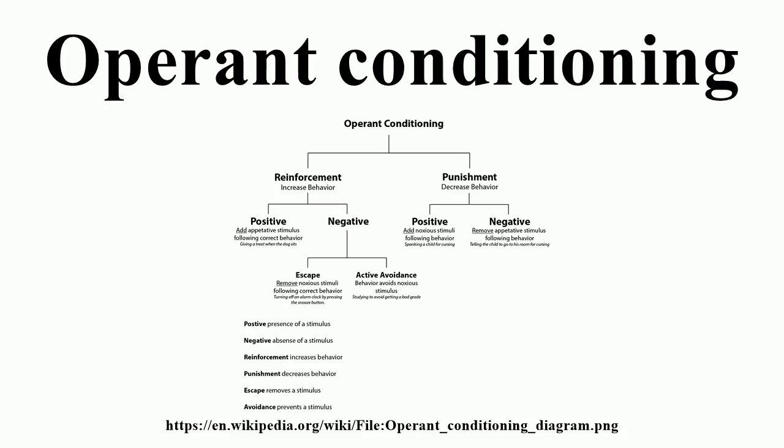In 1948, Skinner published Walden II, a fictional account of a peaceful, happy, productive community organized around his conditioning principles. In 1957, Skinner published Verbal Behavior, which extended the principles of operant conditioning to language, a form of human behavior that had previously been analyzed quite differently by linguists and others.